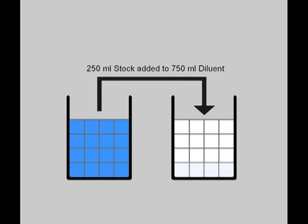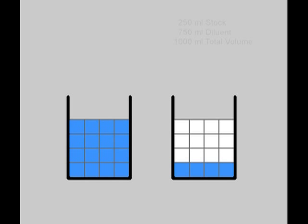In this example, 250ml of the original blue stock is added to 750ml of a diluent, making a total volume of 1000ml.